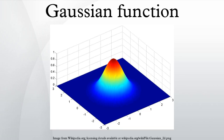Gaussian functions centered at zero minimize the Fourier uncertainty principle. The product of two Gaussian functions is a Gaussian, and the convolution of two Gaussian functions is also a Gaussian.